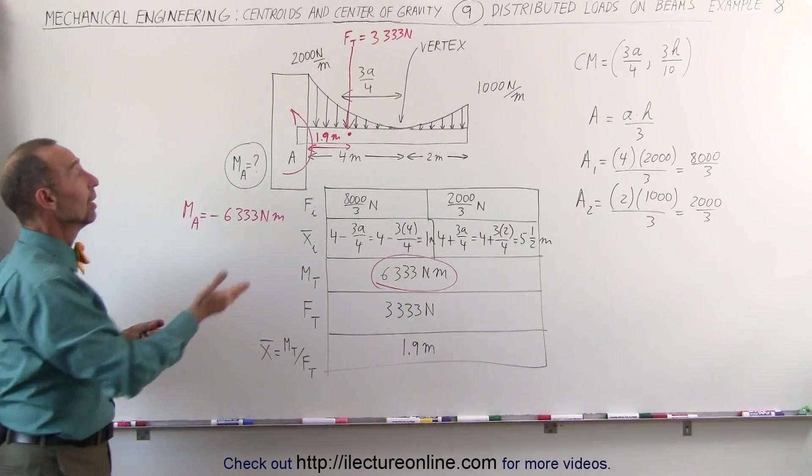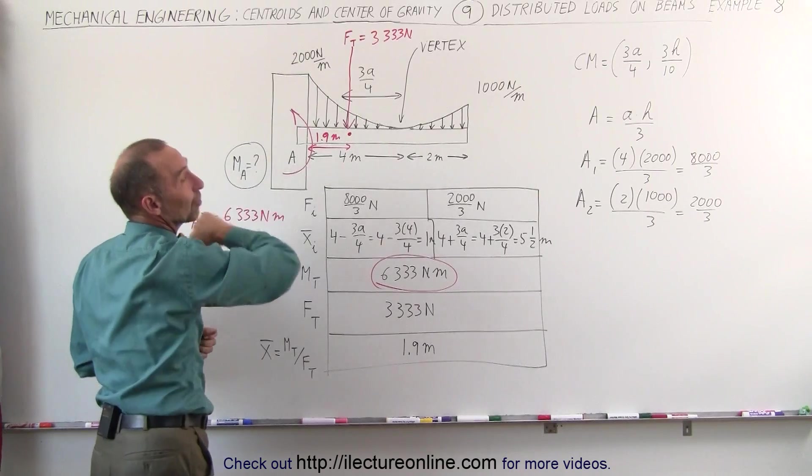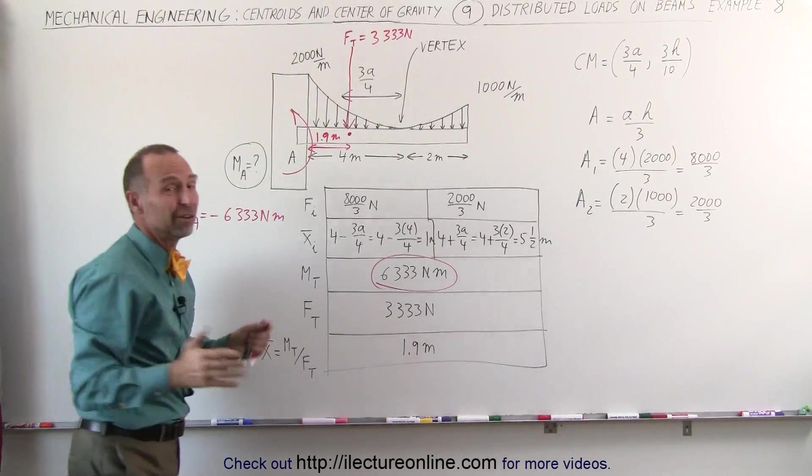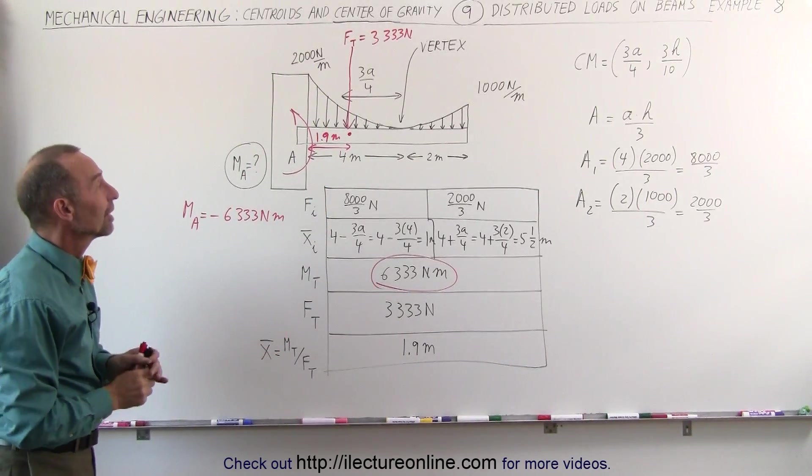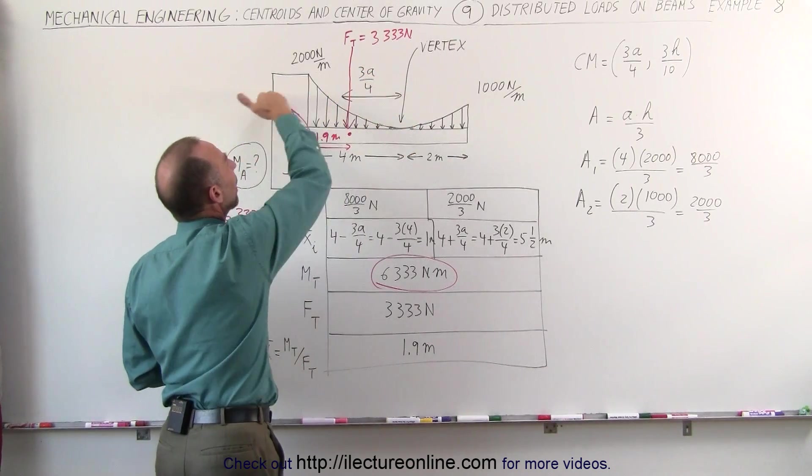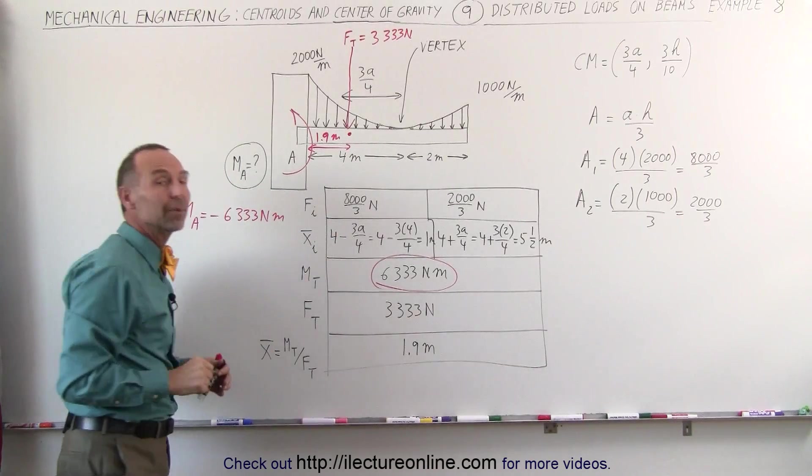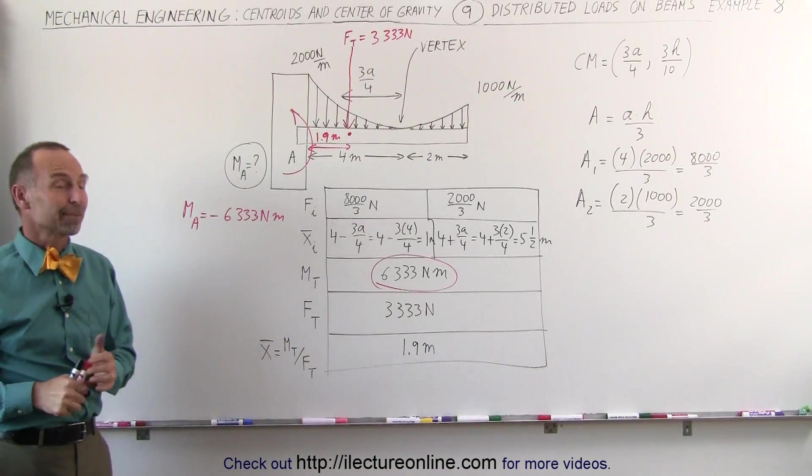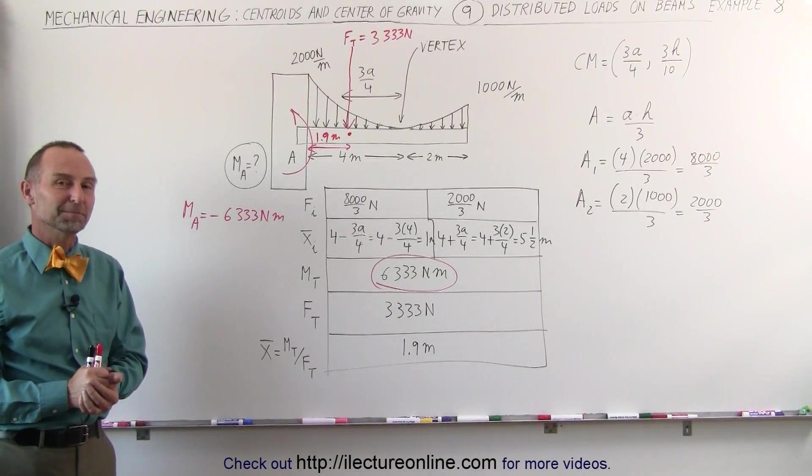Again, traditionally, we count counterclockwise directions positive, clockwise directions negative, but by definition the way I have it here is I call a positive moment, because of the load on the beam, the opposite moment is the compensating moment at point A, and that's how we solve this problem.